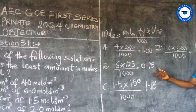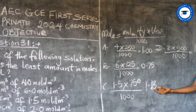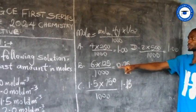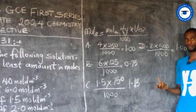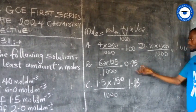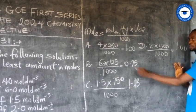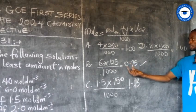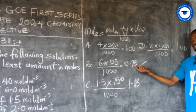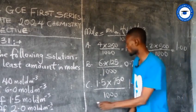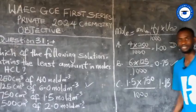Calculating each: Option A = 1 mol, Option B = 0.75 mol, Option C = 1.125 mol, Option D = 1 mol. The smallest value is Option B with 0.75 mol, so the answer is option B.